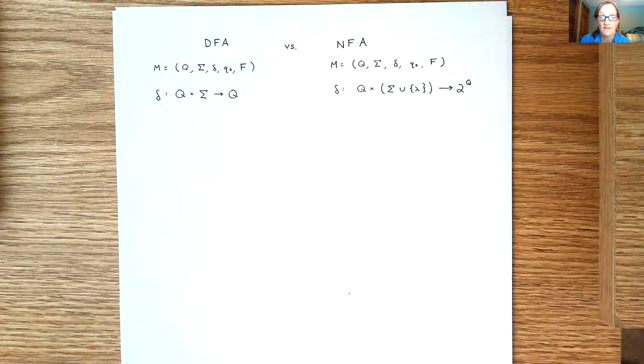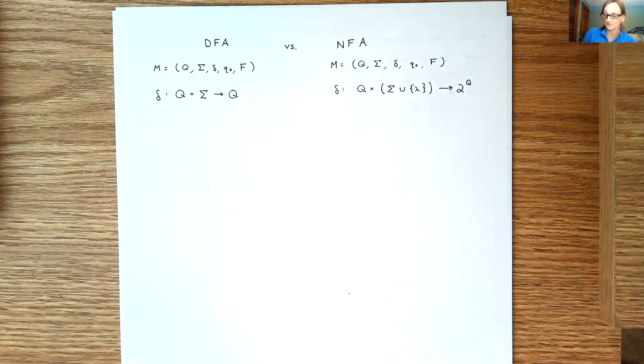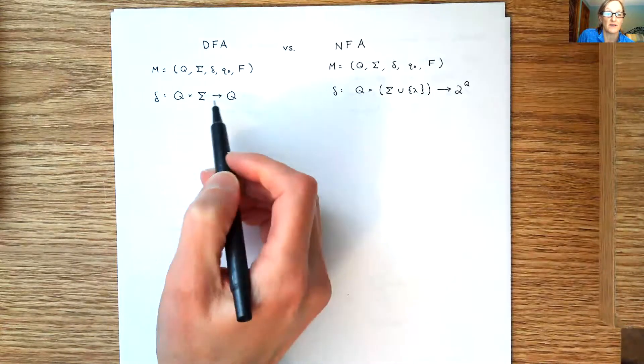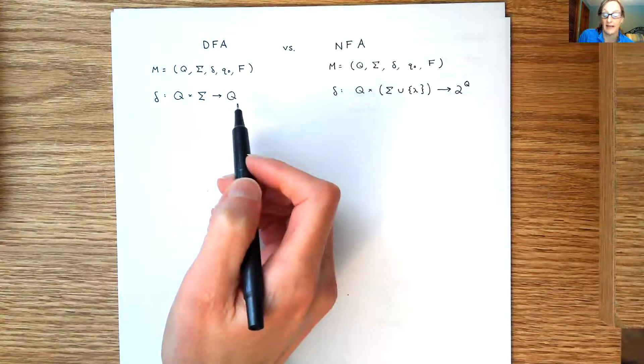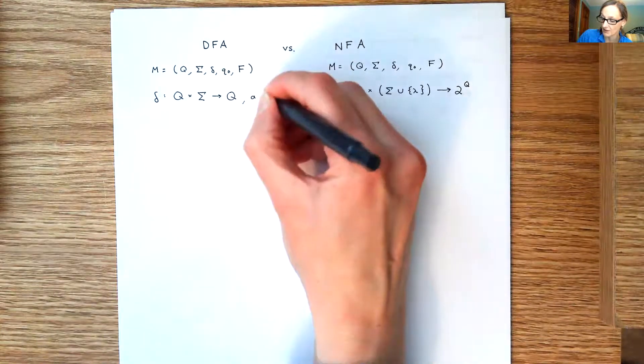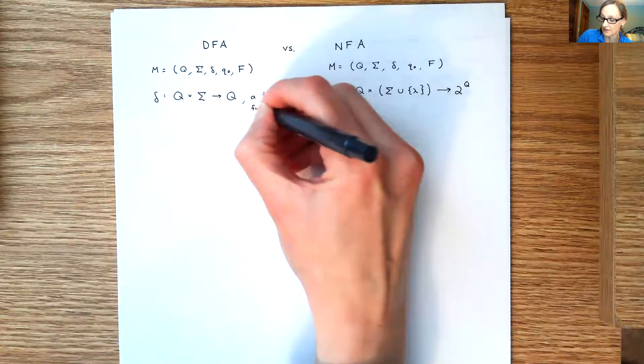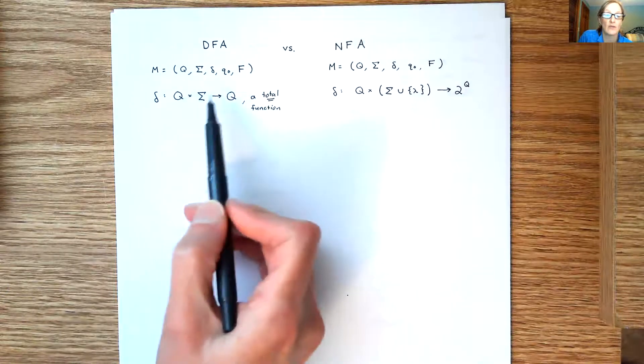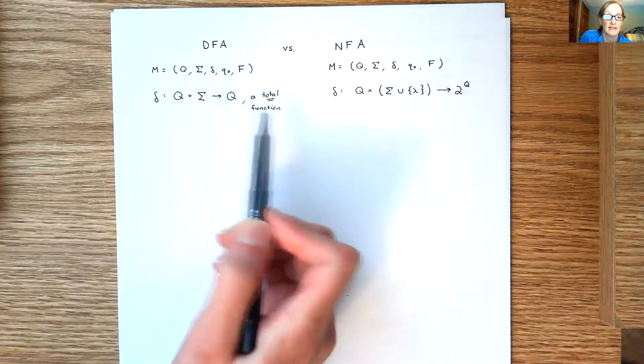That should be familiar to you, similar for both. The only difference is the transition function Delta. So Delta for a DFA goes from Q cross Sigma, so the domain is Q cross Sigma, and then the range is Q. And then the other part that's important is that this is a total function, which means that every single ordered pair in Q cross Sigma must be mapped to some element in Q.